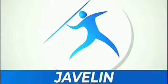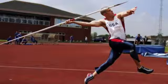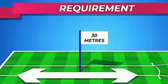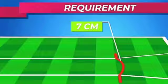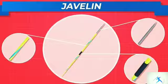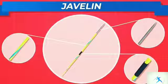Javelin throw is a field event in which athletes run on a 4-meter wide runway and throw the javelin as far as possible. The runway should be minimum 30 meters long and 4 meters wide. At the end of the runway, a foul line is made with a width of about 7 centimeters, called the scratch line. The javelin used in the game consists of three parts: a tip made of metal, a shaft made of wood or metal, and a grip in the center with a diameter about 0.31 inch more than the shaft. The center angle of the javelin is about 28.96 degrees.